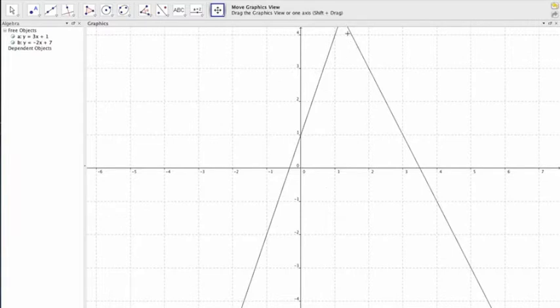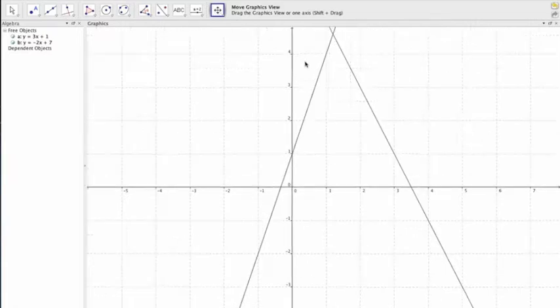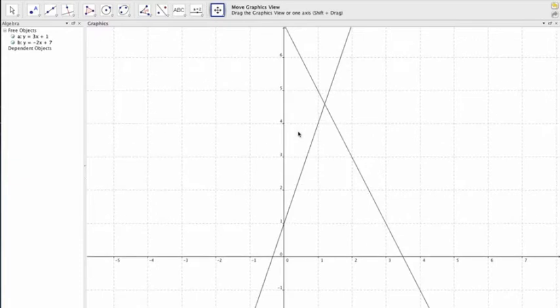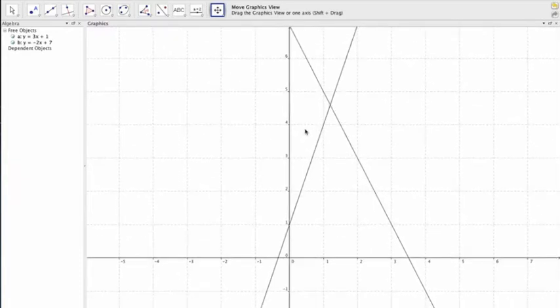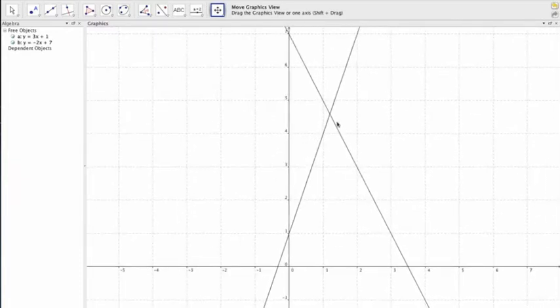All right, so we've got them both graphed. And it looks like they intersect, but somewhere up here. So what we can do is click on this move button. And that lets us drag and figure out where we want to look. So I'm kind of dragging. And I want to drag to where they both intersect each other. And now I can kind of see, yeah, it's somewhere between 1 and 2. And it's somewhere between 4 and 5.